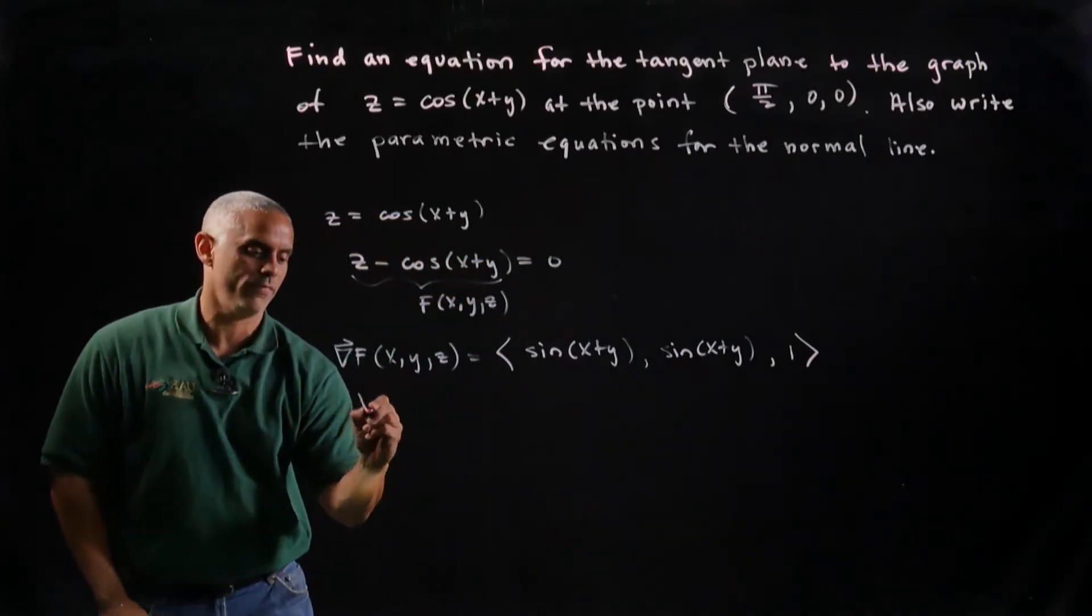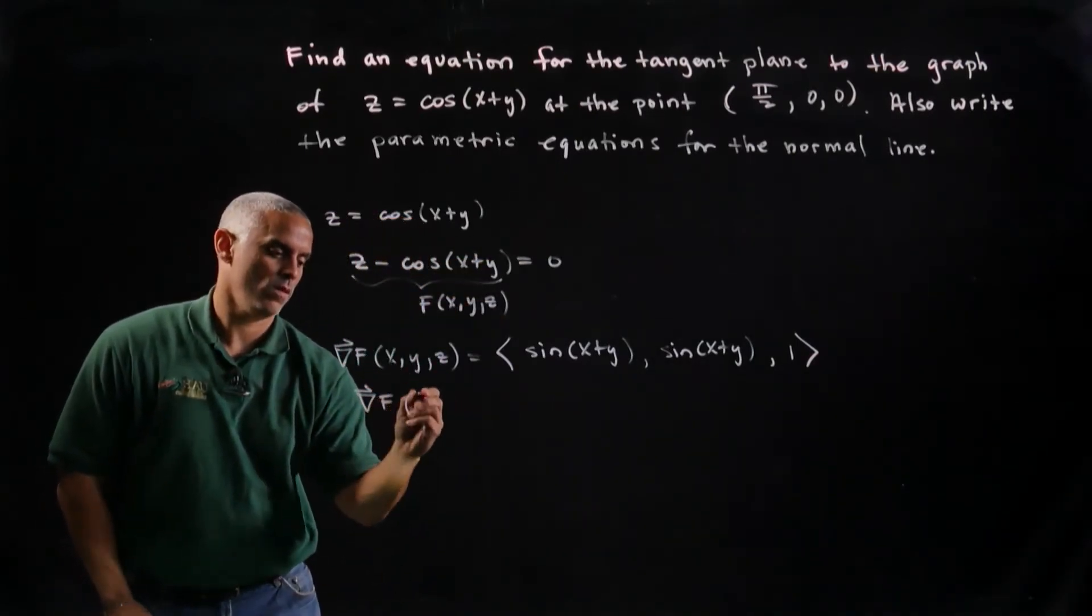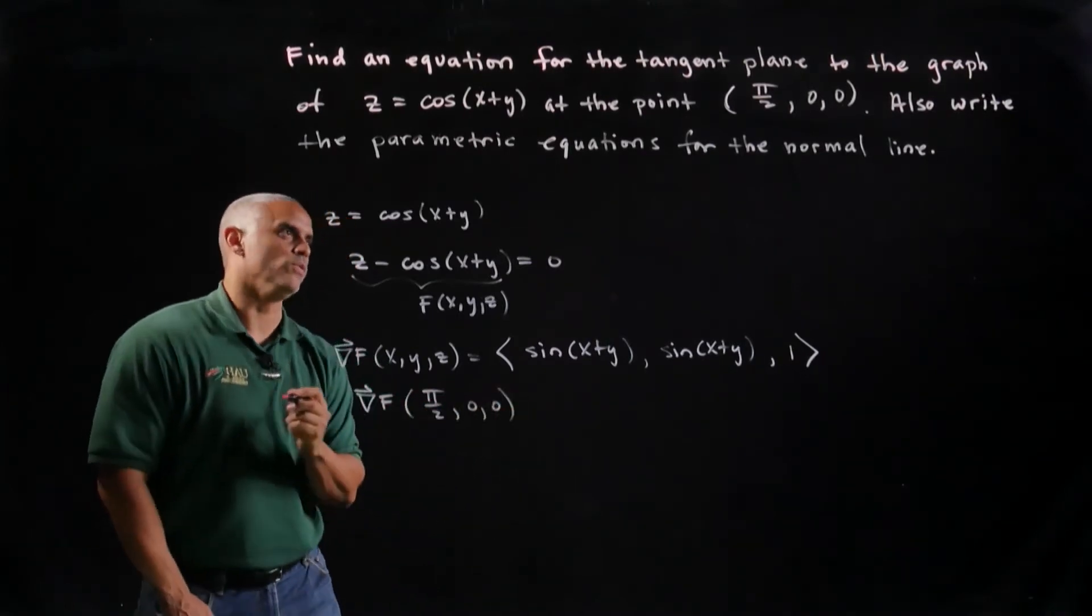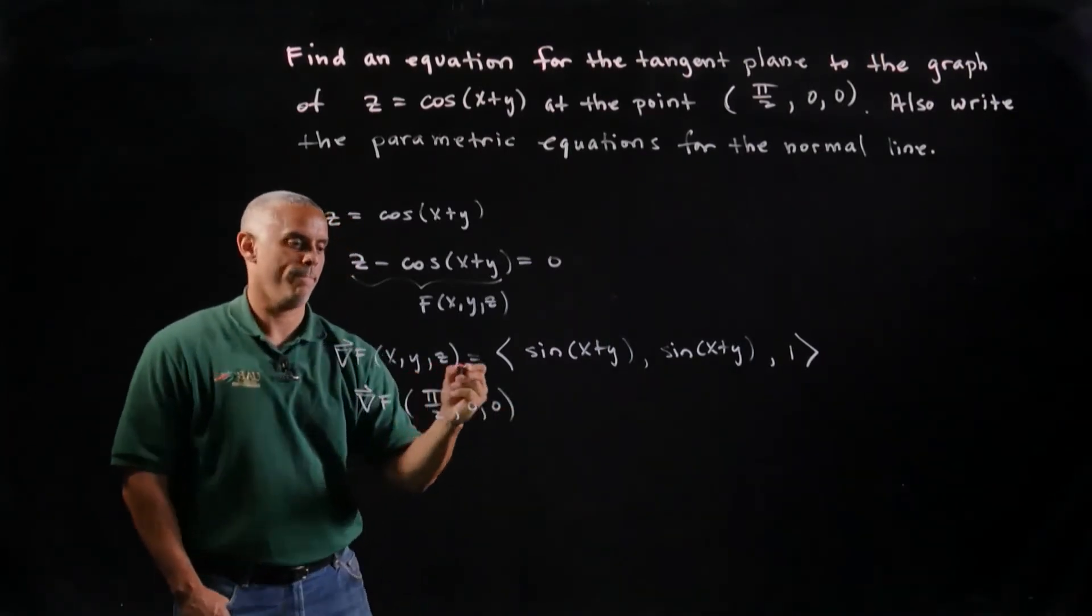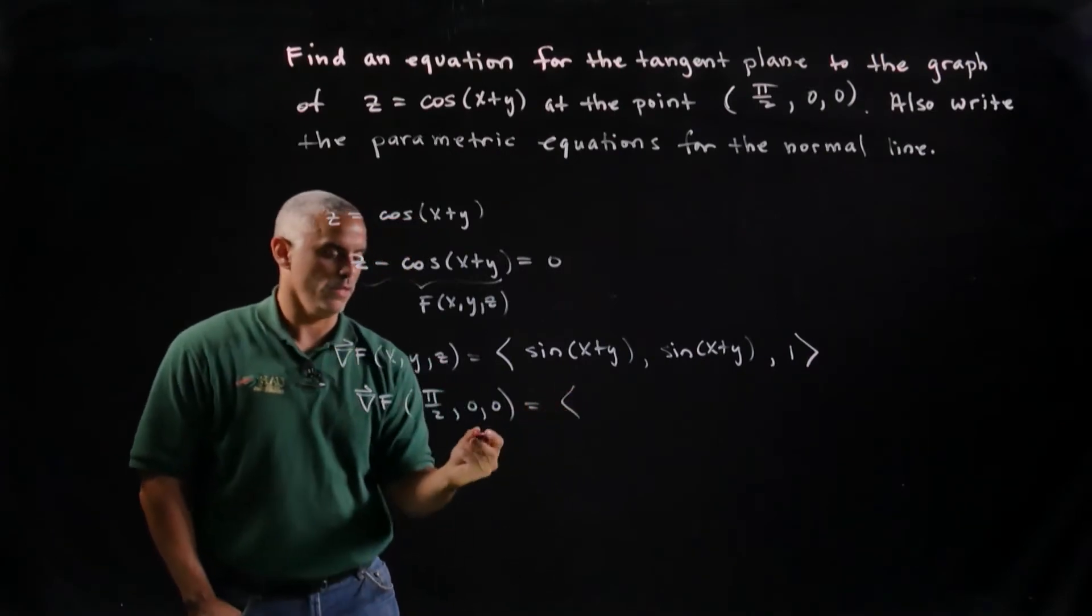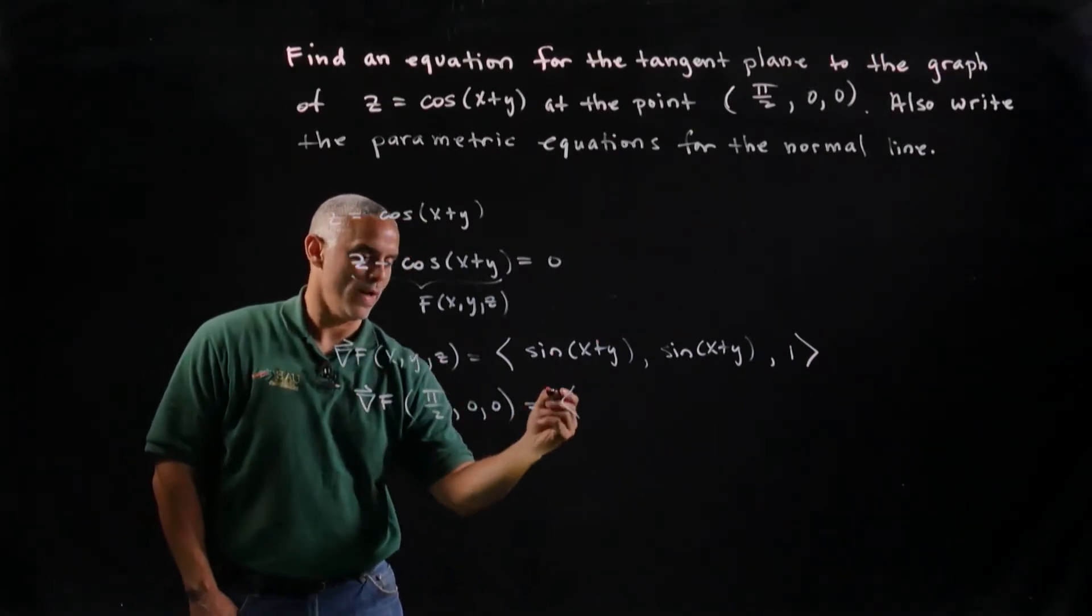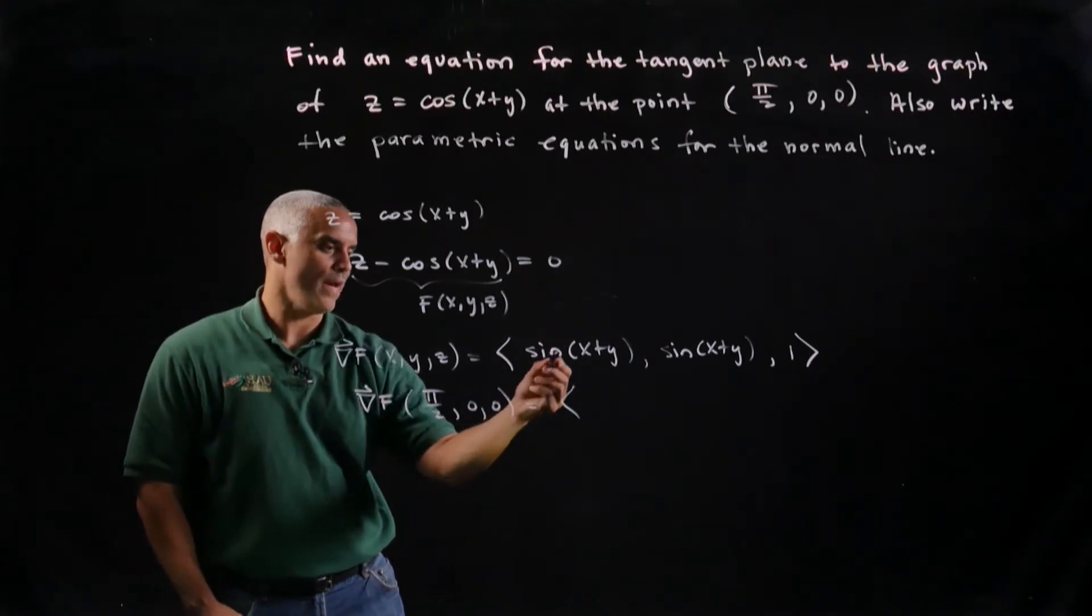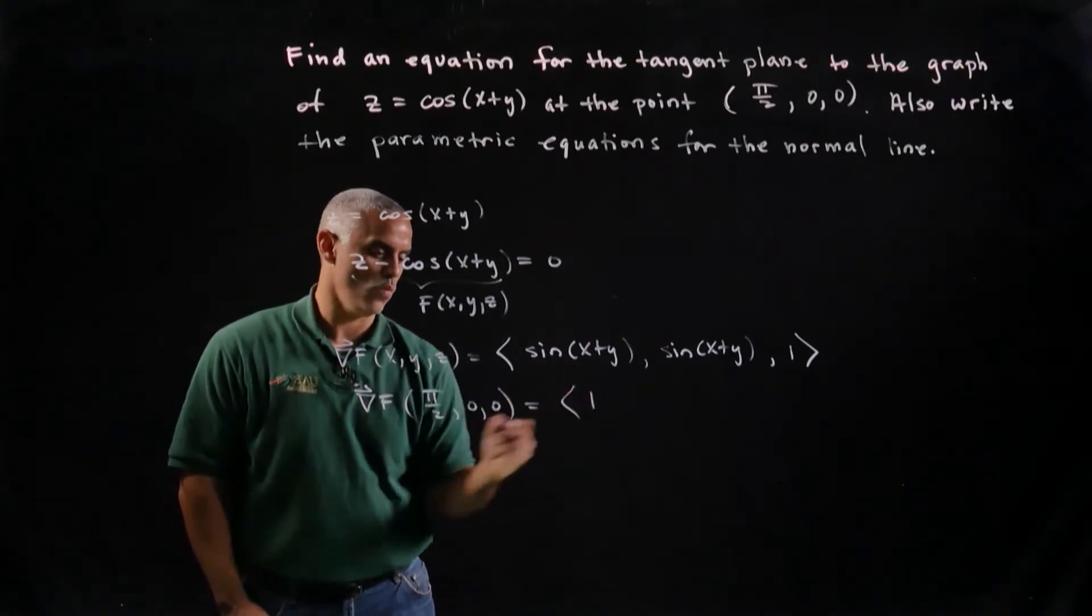We want to calculate the gradient of f at pi over 2, 0, 0. So let's see, I get the sine of x plus y or the sine of pi over 2 plus 0, and we know that the sine of pi over 2 is simply 1.